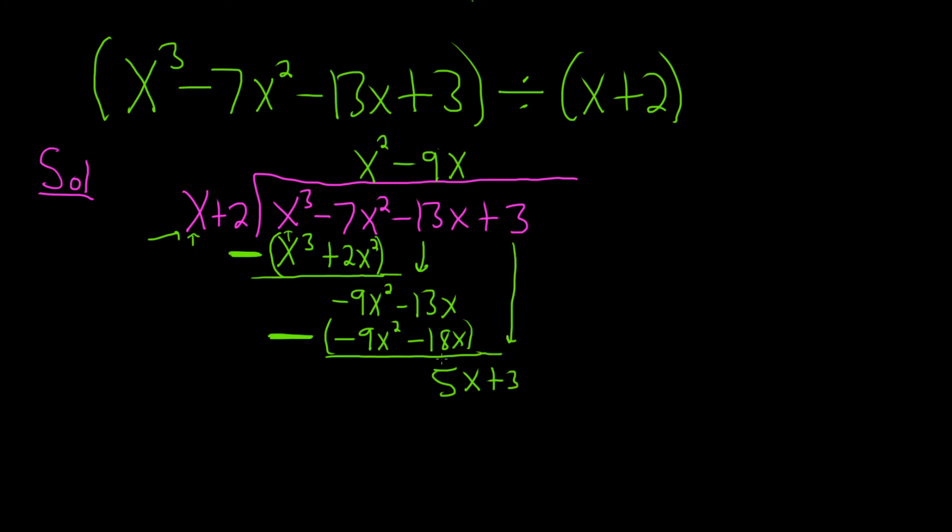Almost done. Then you do it one more time. What do you multiply by x in order to get 5x? So 5. Then you perform the multiplication. 5 times x is 5x. 5 times 2 is 10.